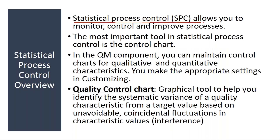Statistical process control allows you to monitor, control, and improve processes. By using this functionality, you try to monitor your business process. Suppose you are purchasing a raw material from a supplier — over a period of time you check your results. For example, suppose he is supplying a material called hydrochloric acid. You check the pH value of the hydrochloric acid.